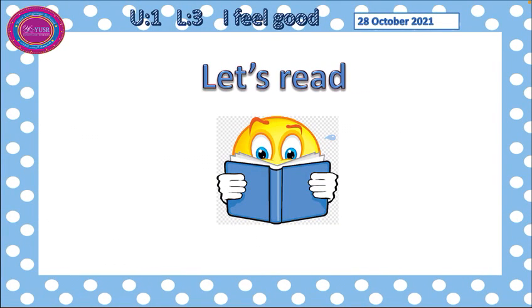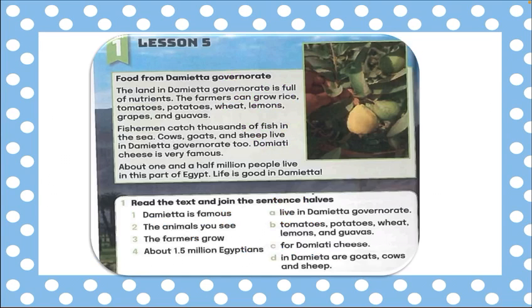Let's read together this text. Before we read, we have a picture. Can you see it? What's this? It looks like a tree. Yes, a tree of what? Is it a kind of fruit or vegetables? I think this is fruit.